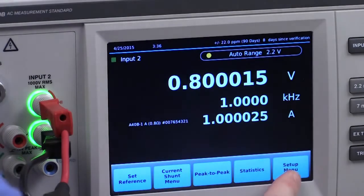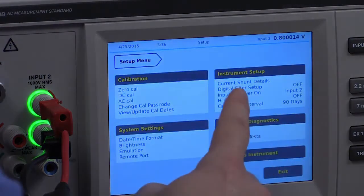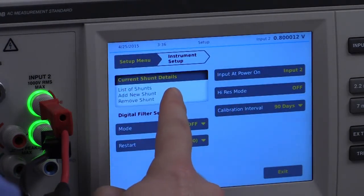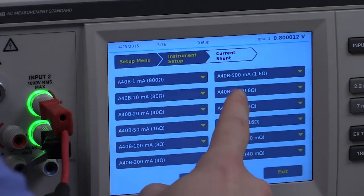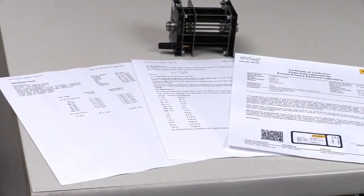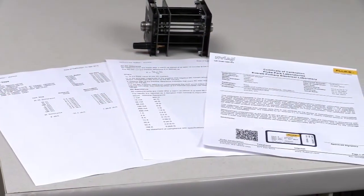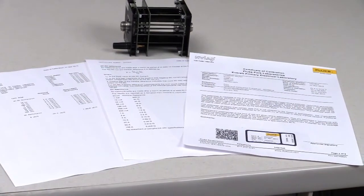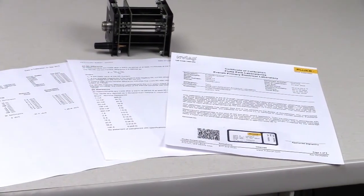This information can be easily loaded using the current shunt menu that allows you to add, edit, remove, and view shunt information very quickly. Current shunts calibrated at Fluke A40B have a calibration certificate that clearly lists all of the information to load into the 5790B.